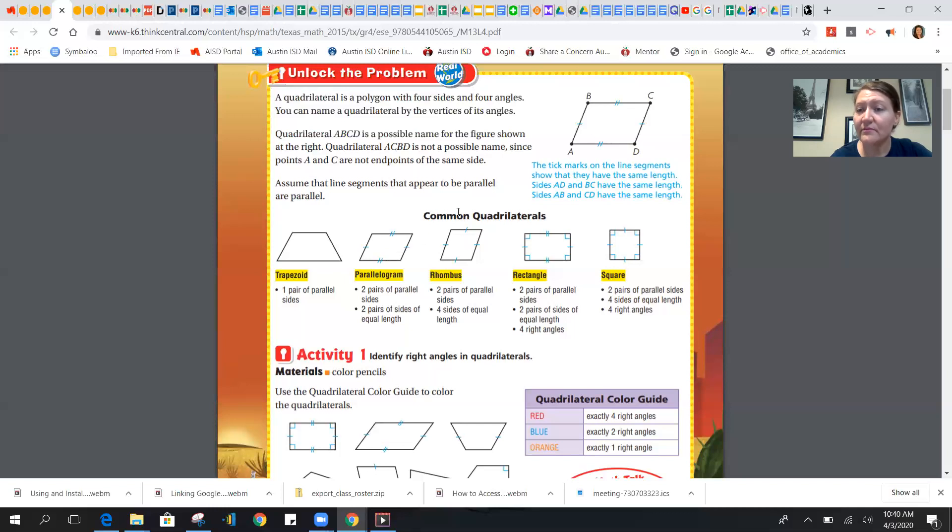Okay. All rectangles are parallelograms, but not all parallelograms are rectangles and squares fit all of the criteria except for trapezoid. But not all of these are squares. So squares are very special in that sense.